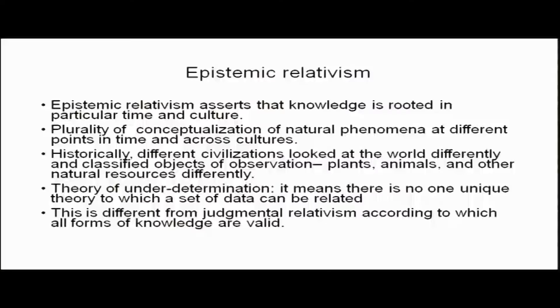For example, in India we have, in ancient times, a very well-developed system of medicine called Ayurveda, which has a theory and therapeutics based on that theory, and is still being used to cure various ailments. Similarly, Chinese medicine is very important; it has evolved over time and is based on certain theories about properties of substances extracted from nature. The theory of under-determination is another principle which allows us to relate data to more than one theory — meaning there is no one unique theory to which a set of data can be related.